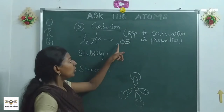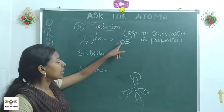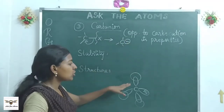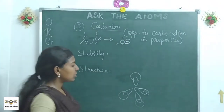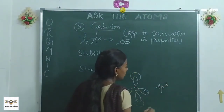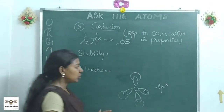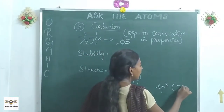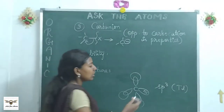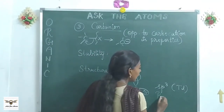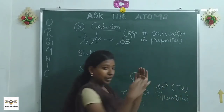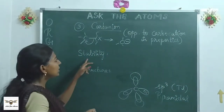Although the carbanion looks similar to the carbocation — just with a negative charge — its structure is different. The carbanion has SP3 hybridization, making it almost tetrahedral. However, because of the lone pair and electron repulsions, the actual structure is pyramidal, just like ammonia.